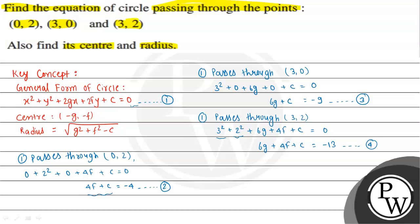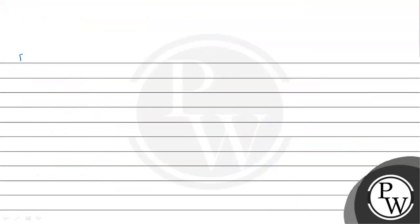Using equations 2 and 4, we subtract to eliminate terms: 6g - 4 = -13, so 6g = -9, giving g = -9/6 = -1.5. Substituting g = -1.5 back into equation 3: 6(-1.5) + c = -9, so -9 + c = -9, therefore c = 0.